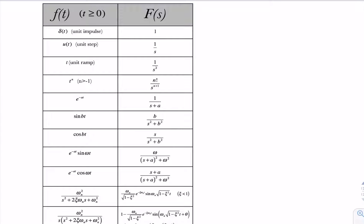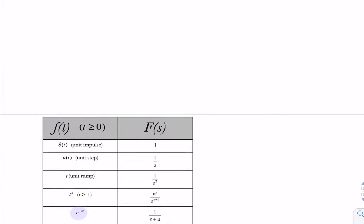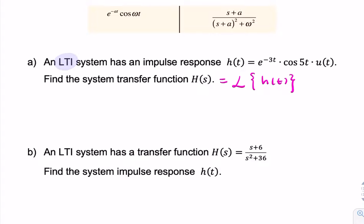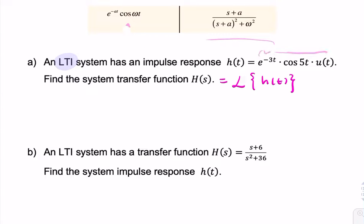So what we're after is something in the table that has an exponential and a cosine multiplied together. The only one we find is this one. In the time domain that's what we see, and the equivalent in the S domain is that — so that's what we would be putting back into our question. That is identical to that, with the exception of the unit step, but the unit step simply means this is defined for T greater than or equal to 0, so having it or not makes no difference in this case.